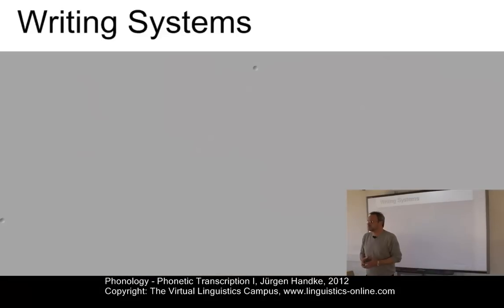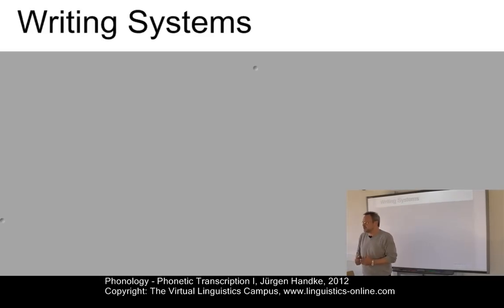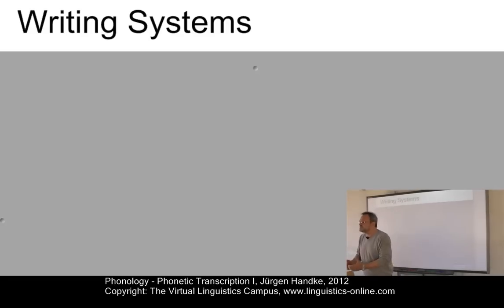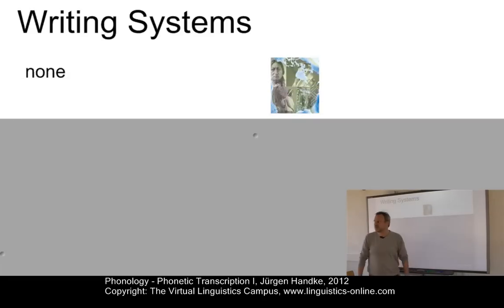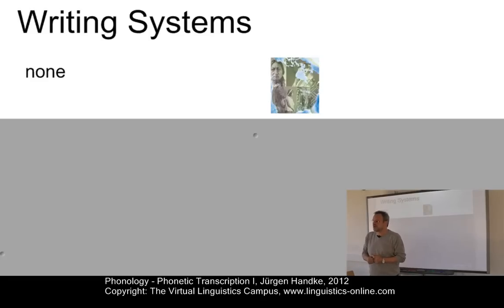In looking at the writing systems around, the first question you might ask is: couldn't we take the alphabet of the language in focus in order to transcribe and describe its sound system? Well, in looking at the writing systems of the languages of the world, we easily see that this is not a suitable option. There are, for example, languages that do not have a writing system at all. About 85% of the languages of the world do not have writing systems. How shall we describe the sound structure of such a language?